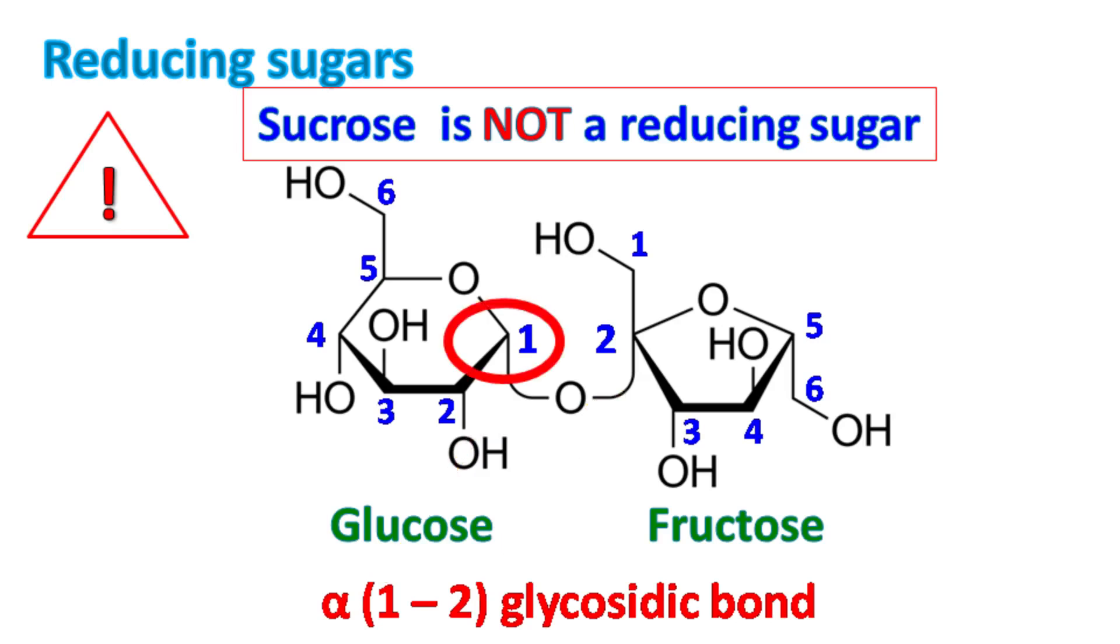Now, look carefully. The first carbon of glucose has an aldehyde group and here it is involved in the bond formation. The second carbon of fructose has a keto group and it's also involved in the bond formation. Because sucrose does not have a free aldehyde or keto group, sucrose is a non-reducing sugar.